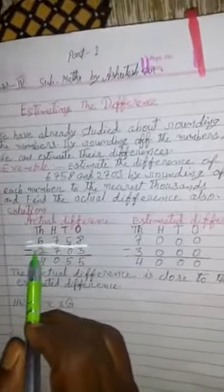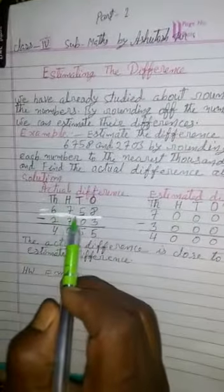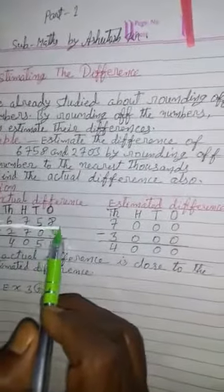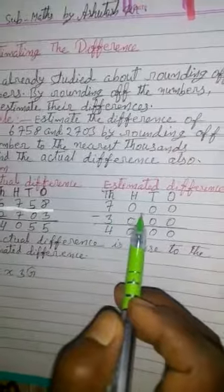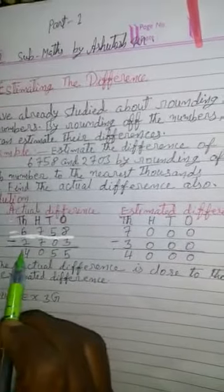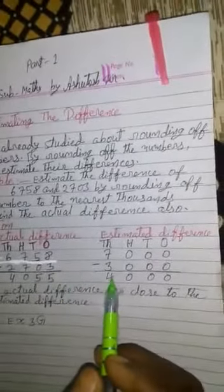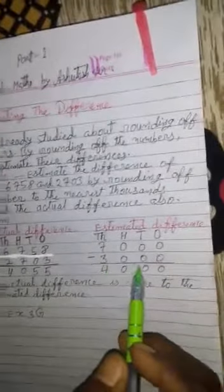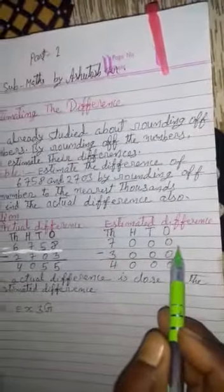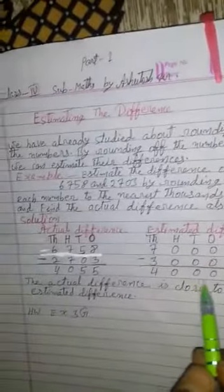Rounding to the nearest thousand, 6758 equals 7000. Rounding to the nearest thousand, 2703 equals 3000. So 7000 minus 3000 equals 4000.